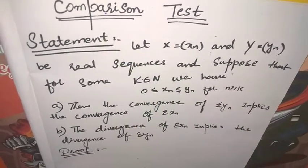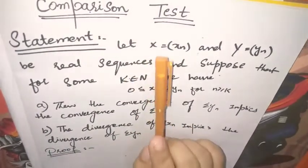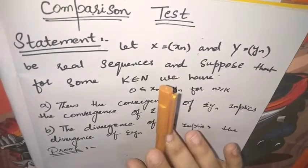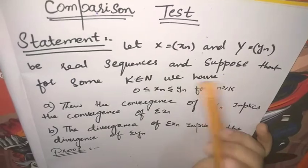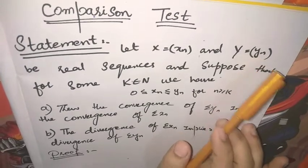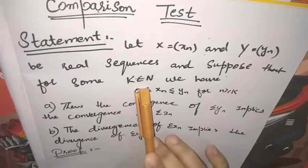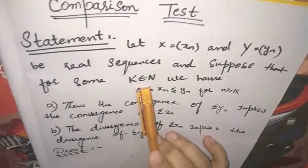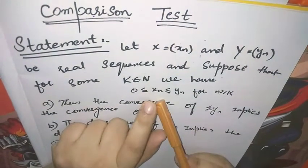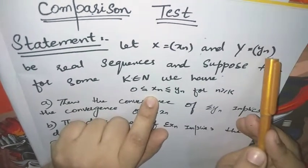سب سے پہلے ہم اس criteria کو سمجھتے ہیں کہ اس میں کیا کہا گیا ہے۔ اگر ہمارے پاس x اور y کوئی دو sequence ہیں real numbers کی — ہم نے numbers کی sequence کی بات کرنی ہے — تو ایک تو ہمیں یہ چیز given ہے: xn given ہے، yn given ہے، دو real sequences given ہیں۔